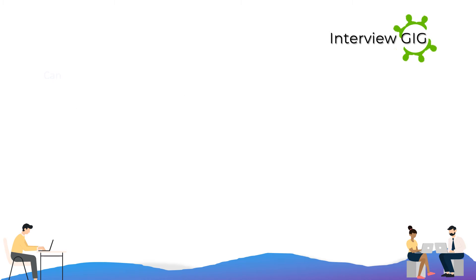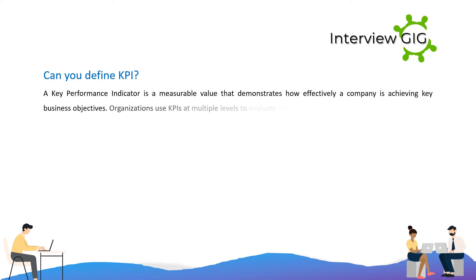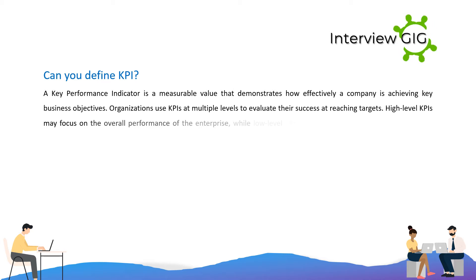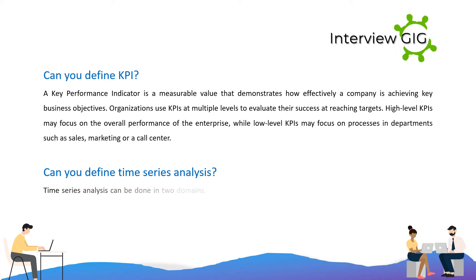Can you define KPI? A key performance indicator is a measurable value that demonstrates how effectively a company is achieving key business objectives. Organizations use KPIs at multiple levels to evaluate their success at reaching targets. High-level KPIs may focus on the overall performance of the enterprise, while low-level KPIs may focus on processes in departments such as sales, marketing, or a call center.